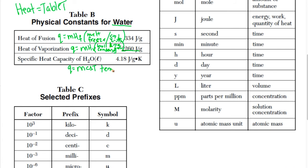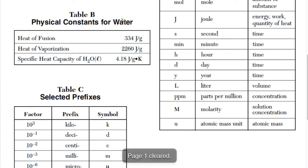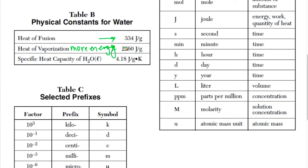For specific heat capacity, use this whenever there is a temperature change — that's what the ΔT in q = mcΔT means. For water experiencing a temperature change, use 4.18 joules per gram Kelvin for c. These values are only for water; if the problem involves a different substance, you need to use different values. The heat of fusion is lower than heat of vaporization because it takes more energy to overcome the complete intermolecular forces going from liquid to gas than from solid to liquid.